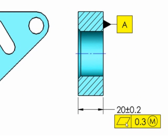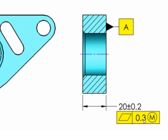It's saying that the derived median plane down through this feature has to be flat within .3 — that would be true if there wasn't the modifier here. But because we have the maximum material condition modifier, it says only at the largest size of 20.2 does it have to be flat within .3.